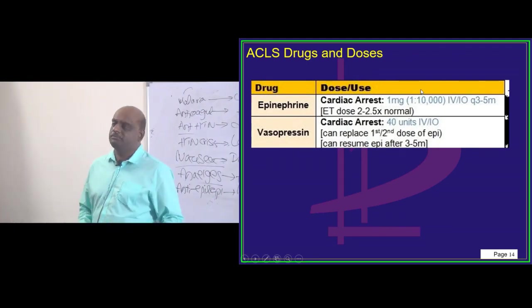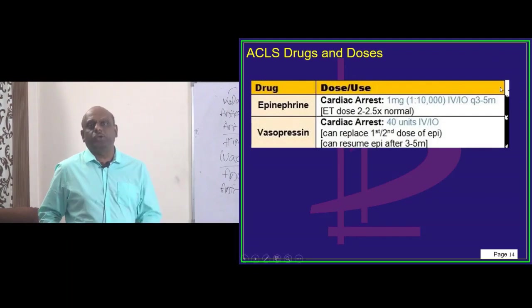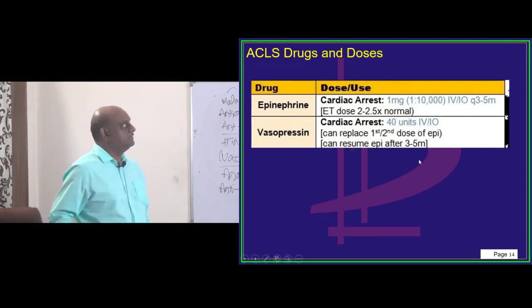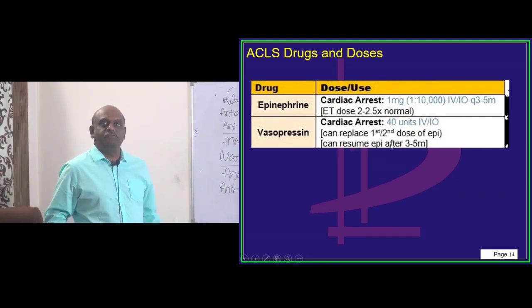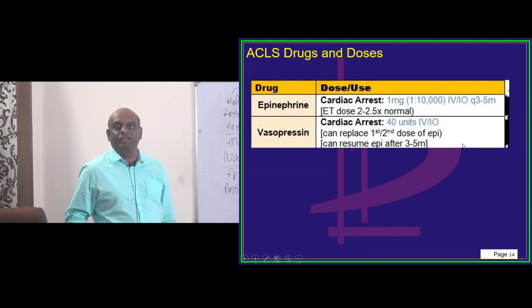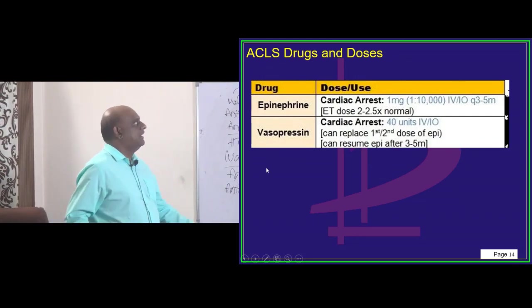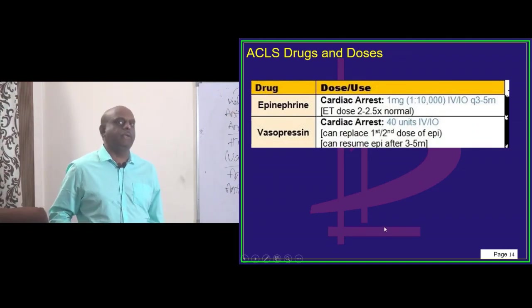Then vasopressin. How much you want to give if there is a cardiac arrest? 40 units intravenously and it can replace the first or second dose of epinephrine and you can resume the epinephrine after 3 to 5 minutes. So that is the story of vasopressin you should remember. 40 units intravenous.